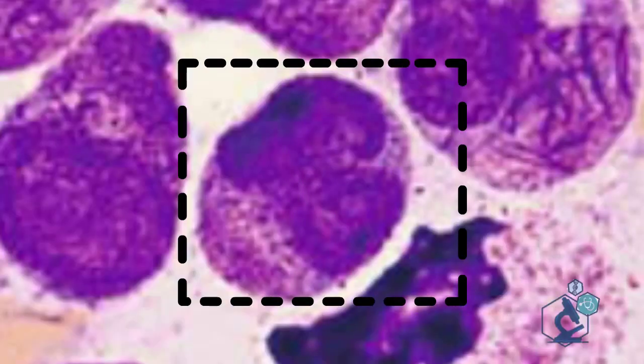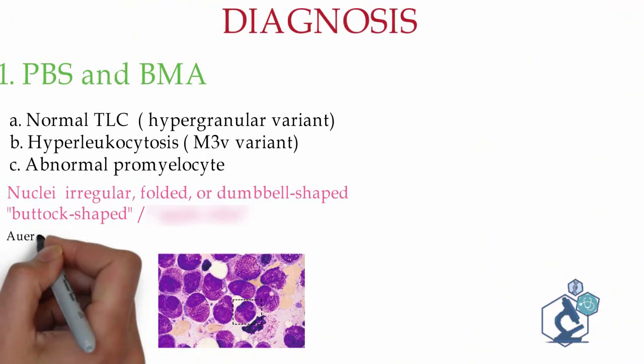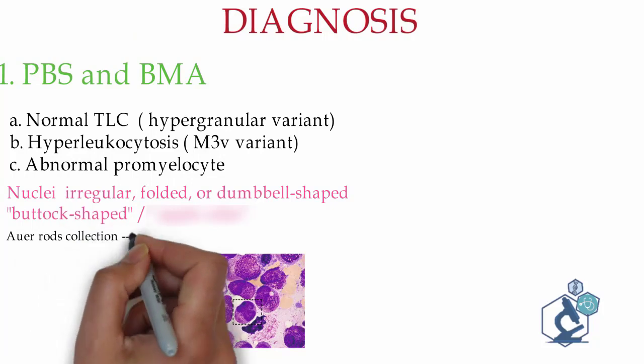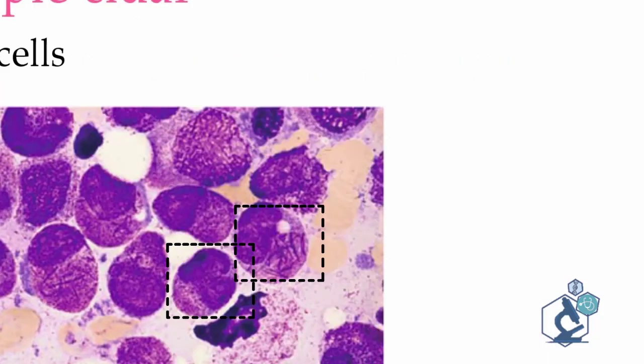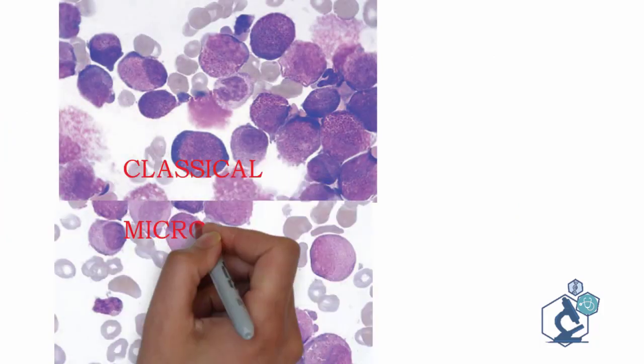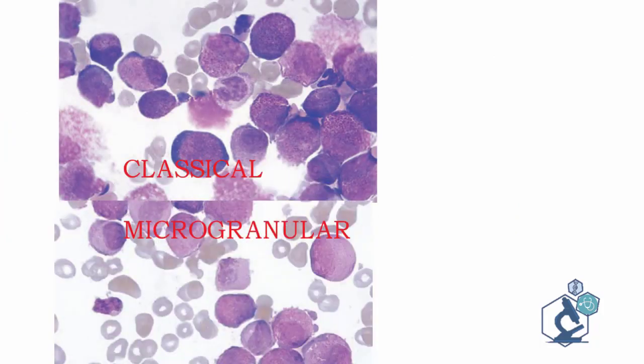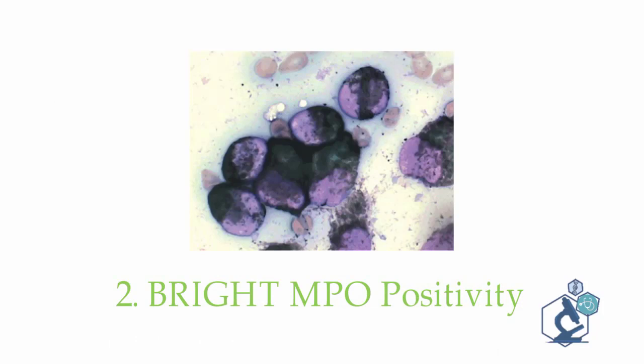As seen in this picture, cells have Auer rods which often occur in bundles, known as faggot cells. These two photomicrographs show the morphological variants of APML. The top picture shows classical APML with granules obscuring the nucleus. The microgranular form with fewer granules but a characteristic bilobed nucleus is seen in the bottom picture. Cytochemistry shows bright MPO staining in the form of dense black granules.